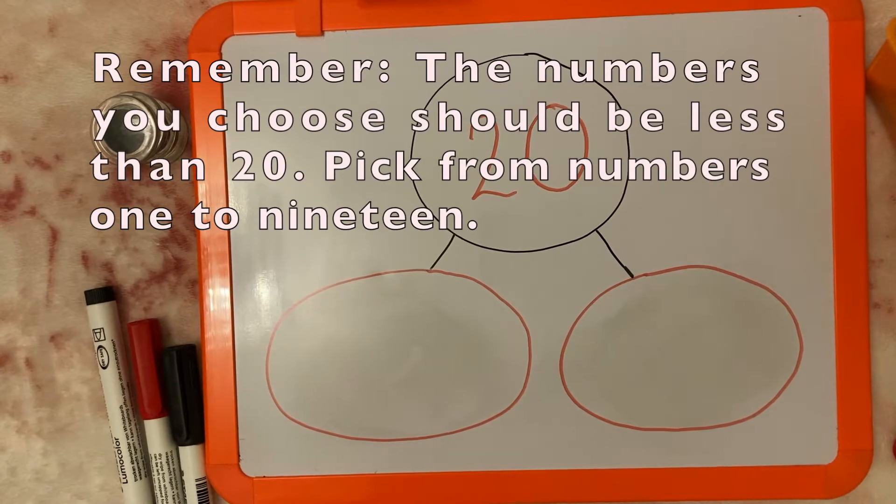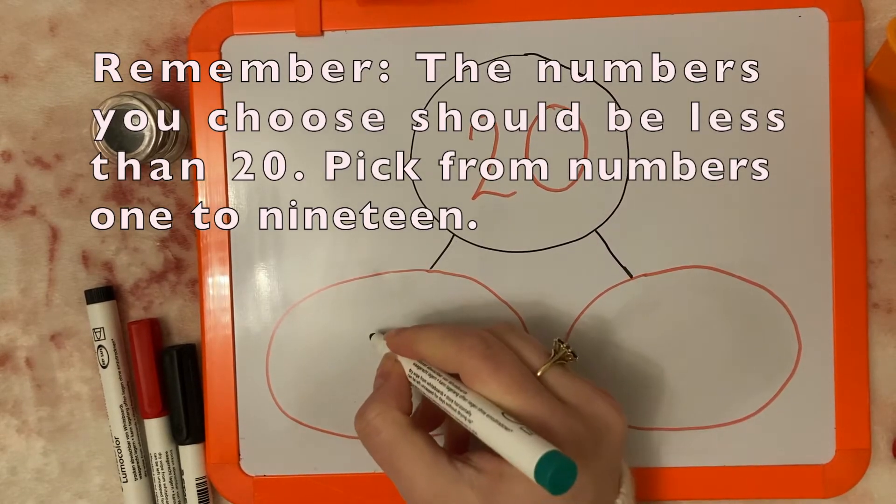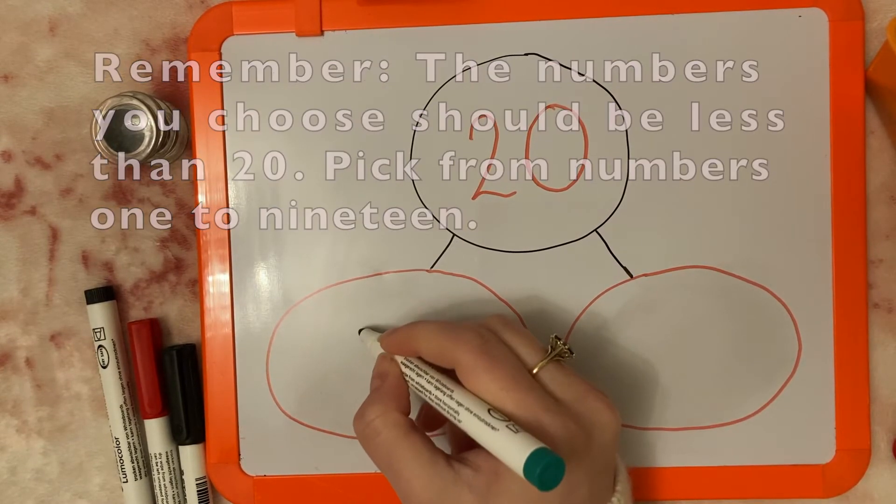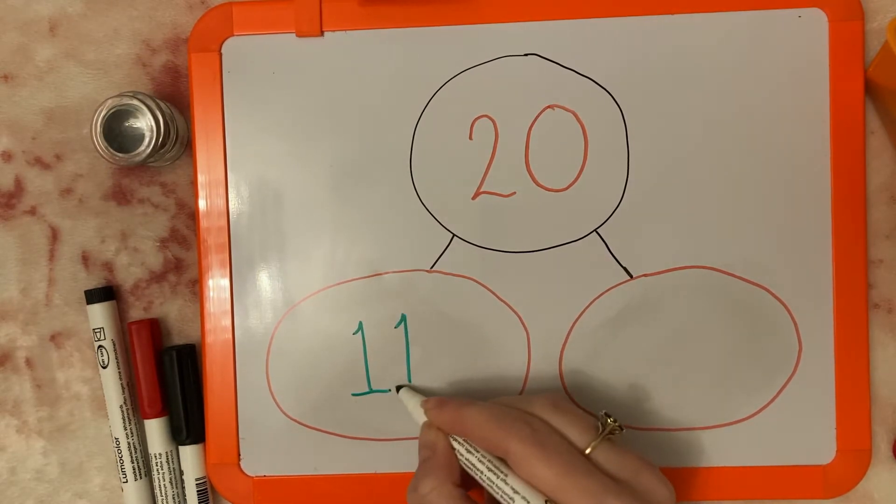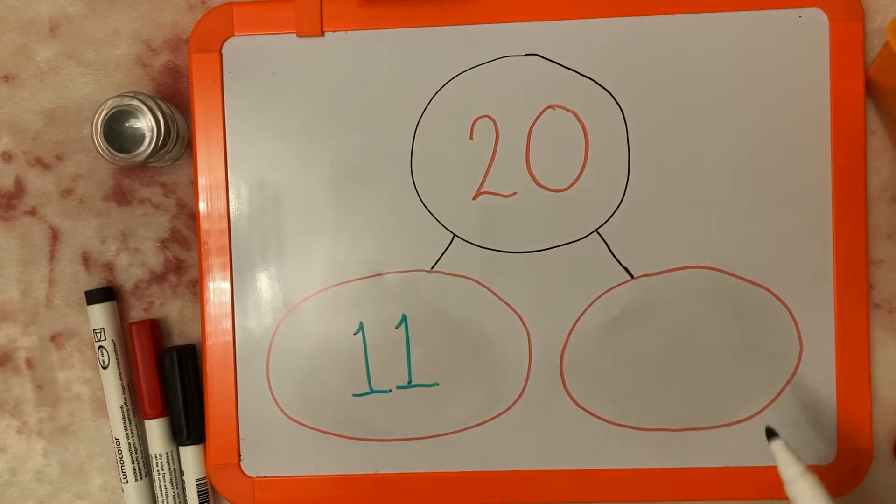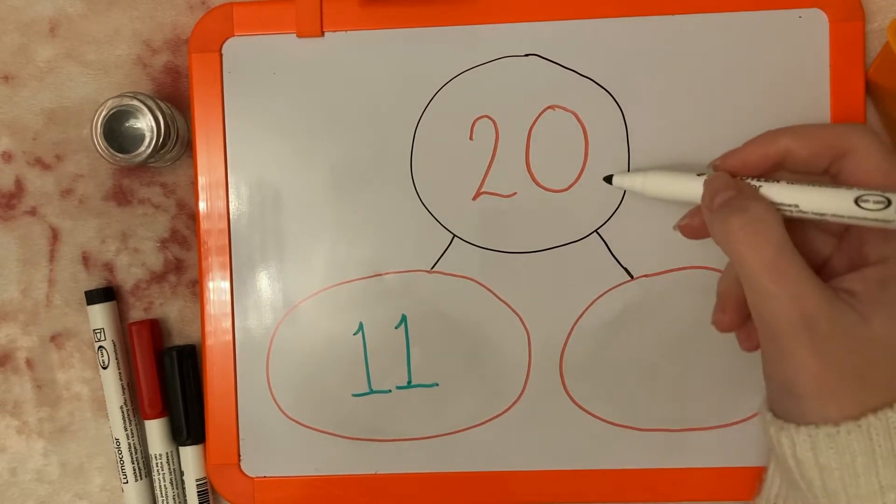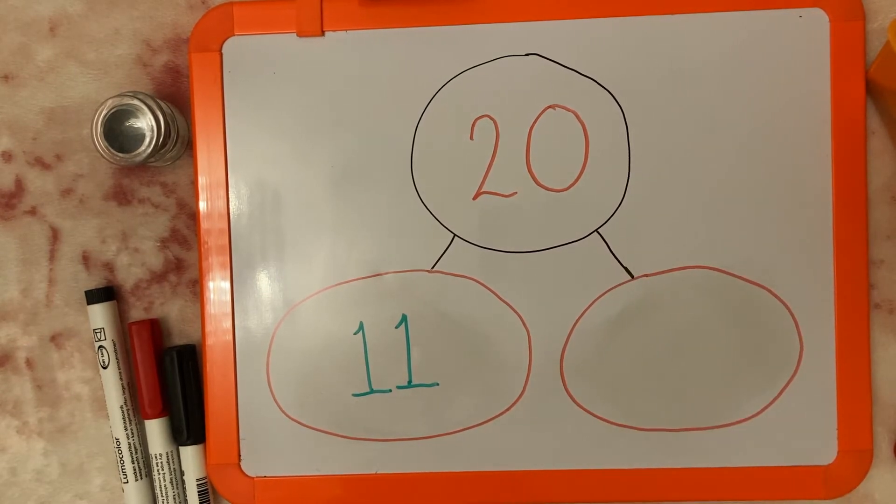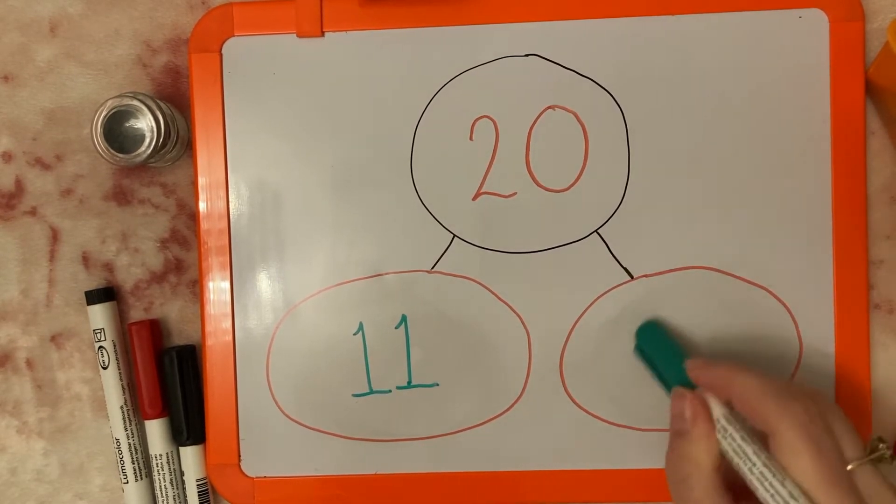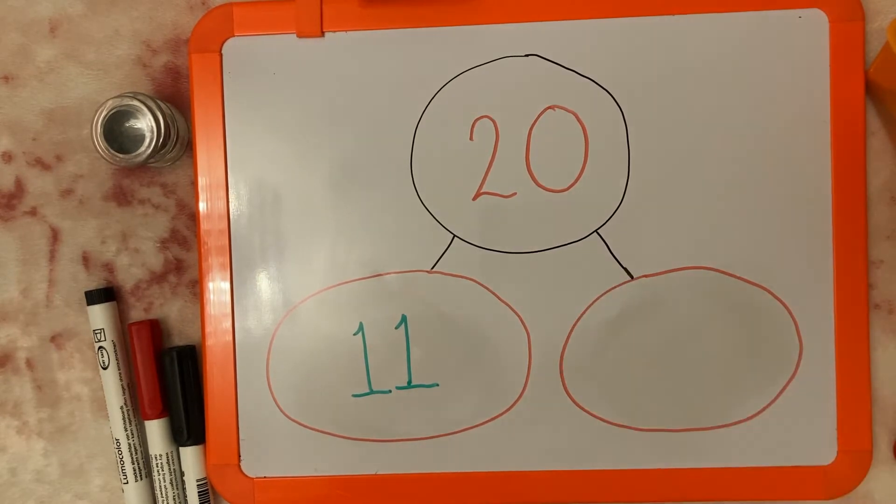If I were to put number 11 in there, as you'll know from the last video, number bonds are just looking at pairs of numbers that can be added together to make the total, which in this case is 20. So if I've got 11 in there, I need to work out how much I'm going to add to 11 to make 20.